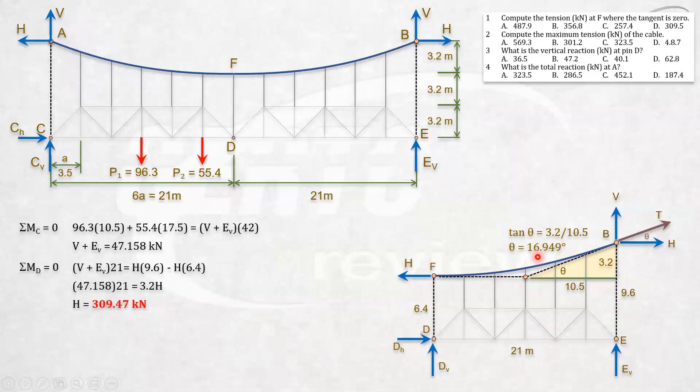We already have the value of theta. Then we can also solve the value of T. We have cosine here in this triangle. Cosine of theta is H over T. Then I can now solve. I already have the value of H and theta is already known. We can now solve the value of T. T is equal to H over cosine theta, and that's 323.52. So that's letter C.